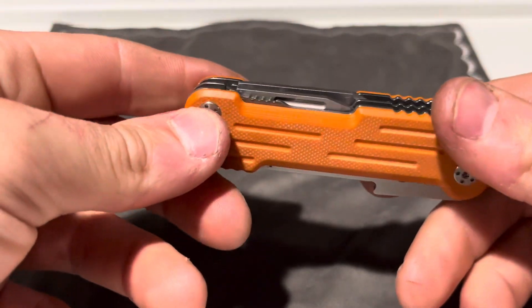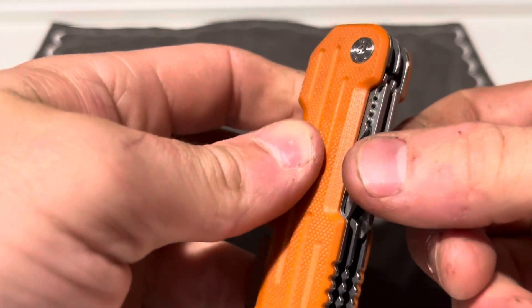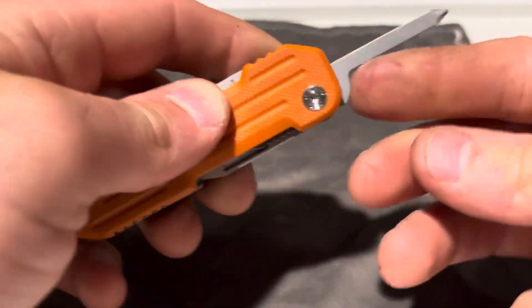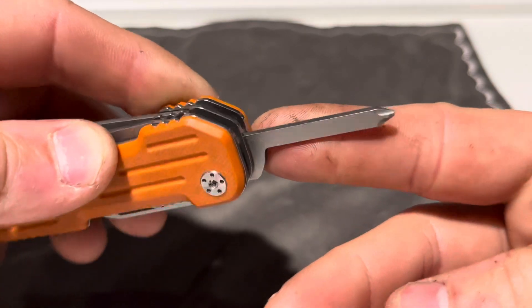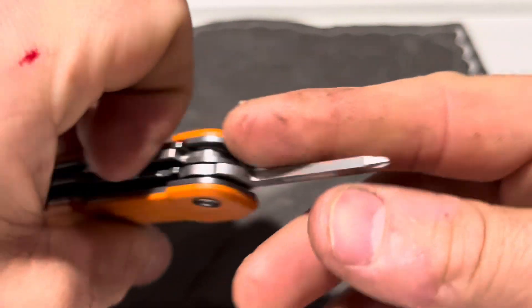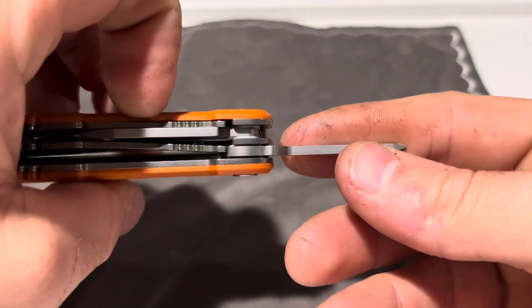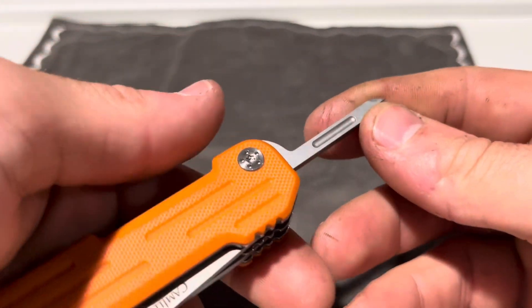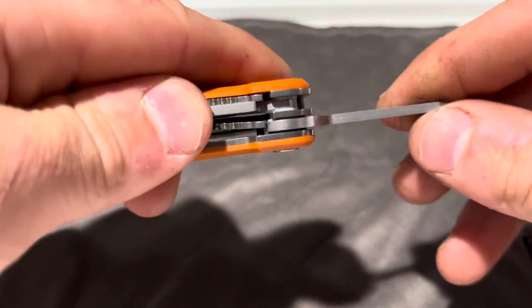Then on the other side you get a Phillips head screwdriver. It's probably a Phillips one; I don't think it's quite big enough to be a Phillips two, but it's still a good sturdy tool.